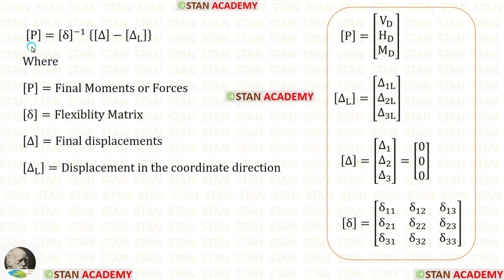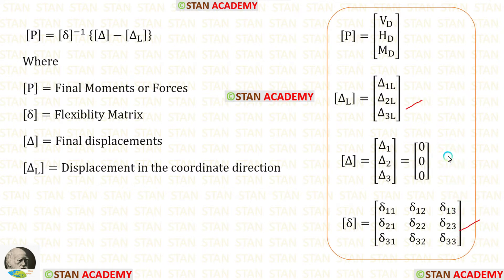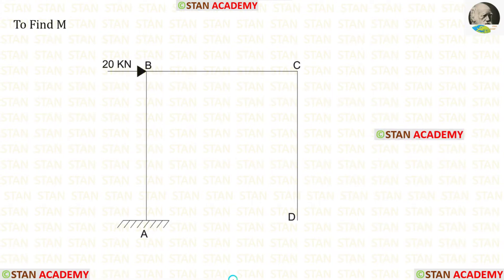We know the formula. To find the final answers, the P matrix equals the delta matrix inverse multiplied by the quantity (delta matrix minus delta L matrix). Inside the P matrix, we will have Vd, Hd, and Md. At support D, there is no settlement or sinking of the supports, and also no rotation. So inside the delta matrix, we can simply enter 0, 0, and 0. Now we are going to find the delta L matrix and the delta matrix using the unit load method. First, we find moment M using the actual loads in the frame.